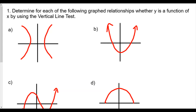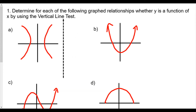Let's get our vertical line and move it across the graph, anywhere across the graph. For number one, we see right here two points that are going to be hit with this vertical line. So this doesn't work out — this is not a function.